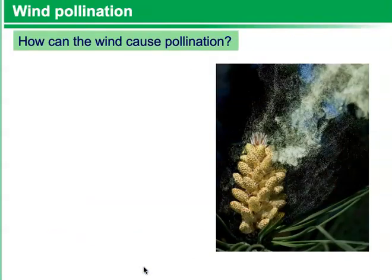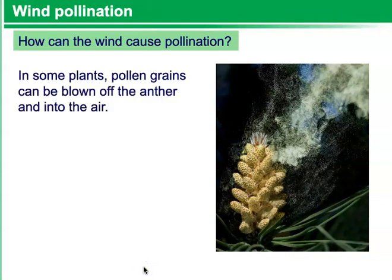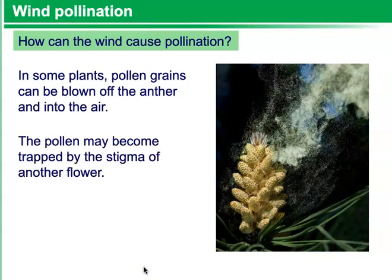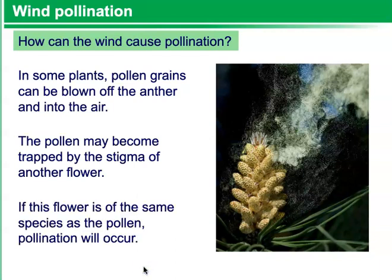How can wind pollinate plants? In some plants, pollen grains can be blown off of the anther and into the air. The pollen may become trapped by the stigma of another flower. If this flower is of the same species as the pollen, pollination will occur. Oftentimes, this is the type of pollination that causes people to have allergies in the spring and in the fall.